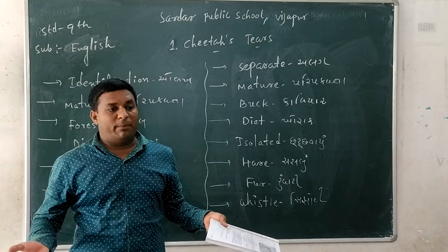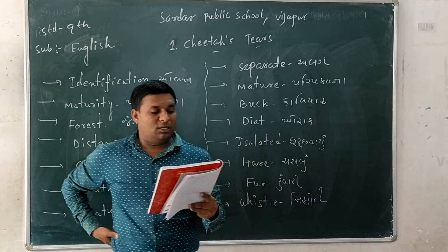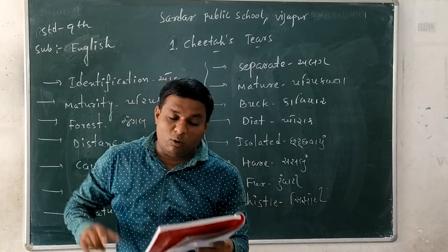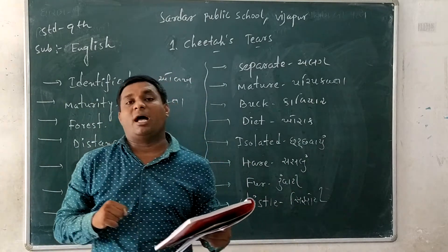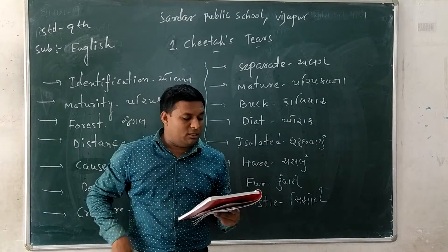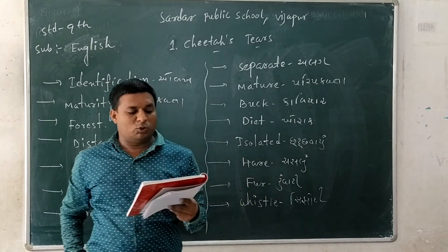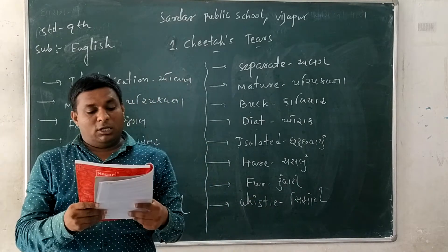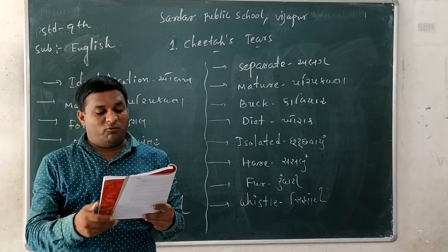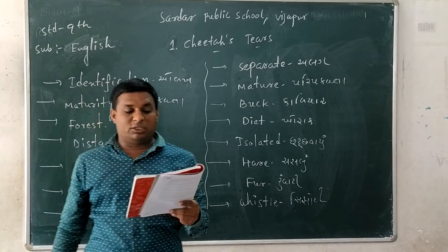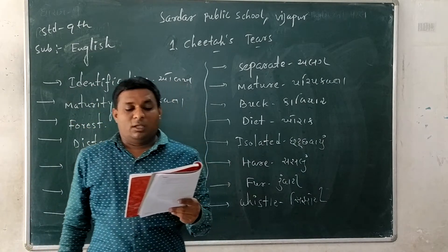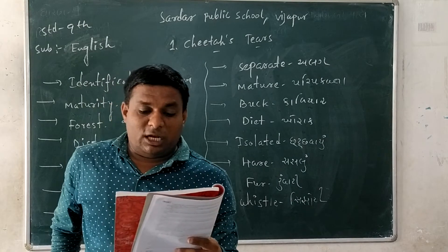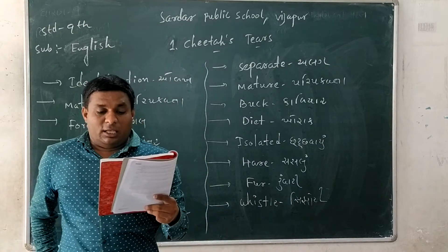Chitta is found in Africa. We had a lot of chitta in India, but the last one was shot around 1950. So we had a lot of chitta in India, but the last one was shot around 1950.